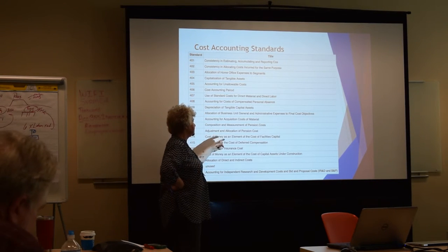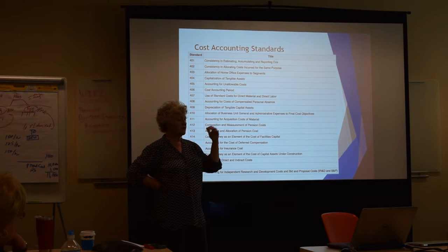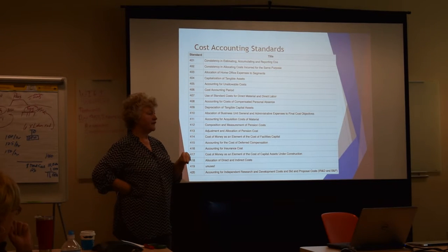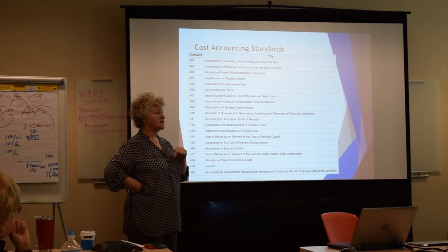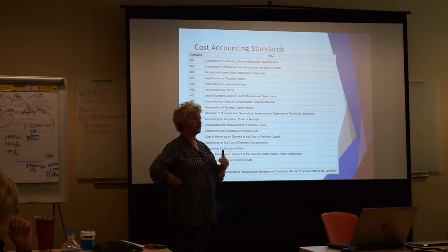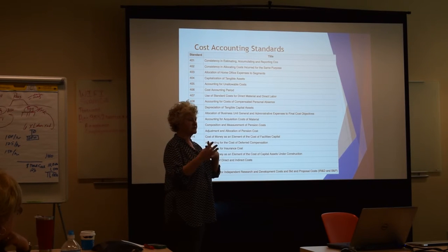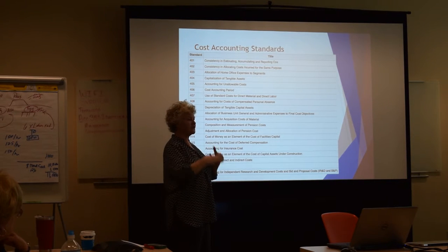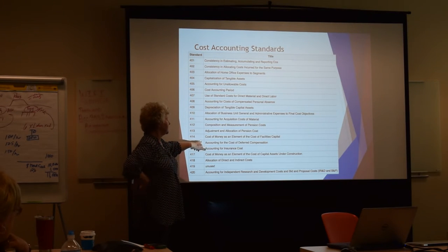Cost of money as an element of cost of facilities capital. To simplify: when I said the cost breakdown is engineer salary, G&A overhead, and fee, there's another cost you can add — facilities capital cost of money. The concept is that a dollar today is worth more than a dollar five years from now. There's a calculation you can do to take advantage of that: the fact that you've put all this money into your building — it's going to last you long term, but you've spent that money today — so you can actually recoup a portion of that from the government.